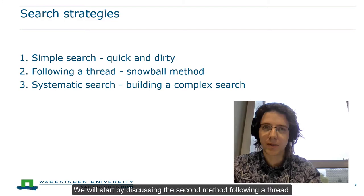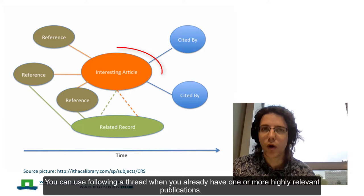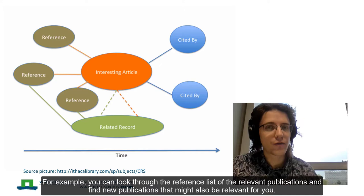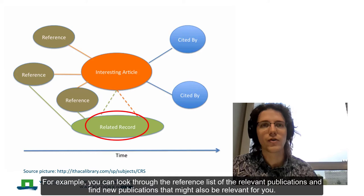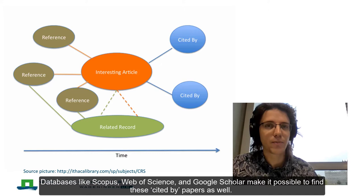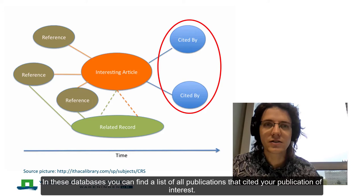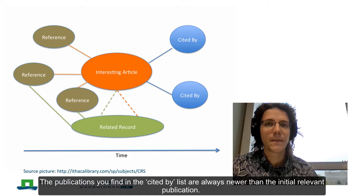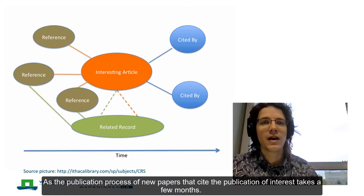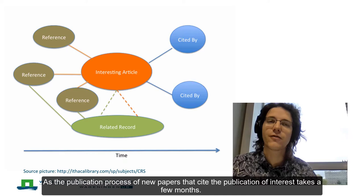We will start by discussing the second method, following a thread. You can use following a thread when you already have one or more highly relevant publications. You can then snowball from one highly relevant publication to multiple new relevant publications. For example, you can look through the reference list of the relevant publications and find new publications that might also be relevant. The relevant paper you already had is probably also cited in other papers. Databases like Scopus, Web of Science and Google Scholar make it possible to find these cited-by papers as well. In these databases you can find a list of all publications that cited your publication of interest. The publications in the cited-by list are always newer than the initial relevant publication. Be aware that if you choose a publication published just last month, you will not find many cited-by publications, as the publication process of new papers that cite it takes a few months.